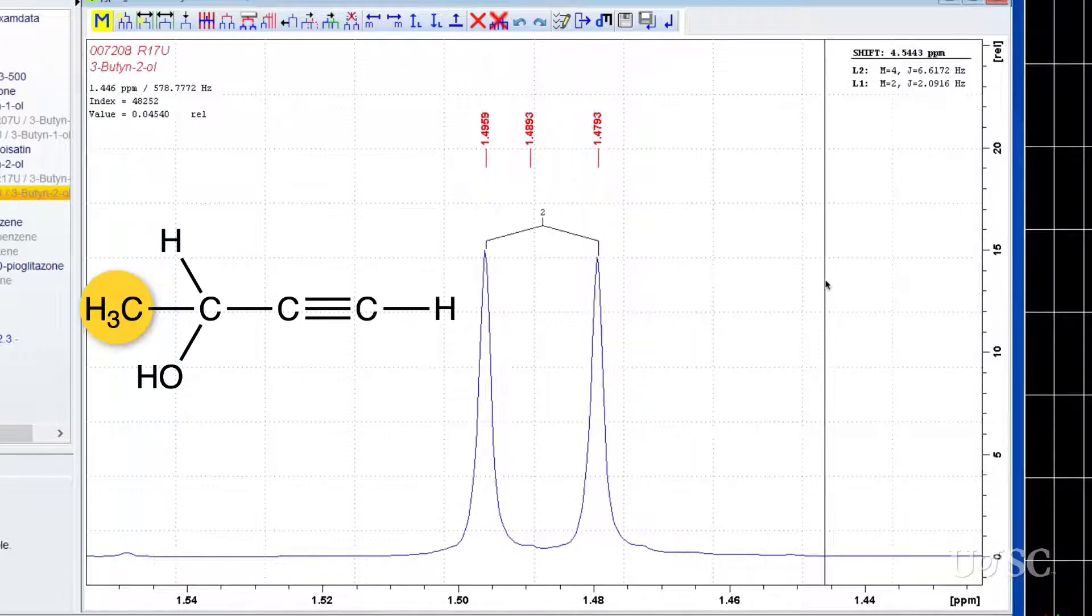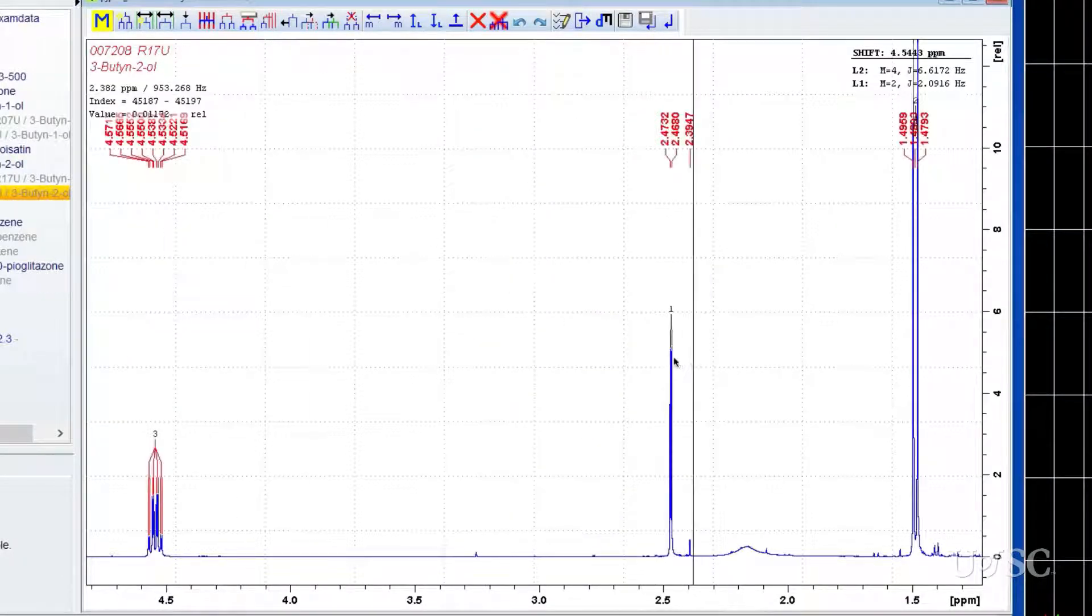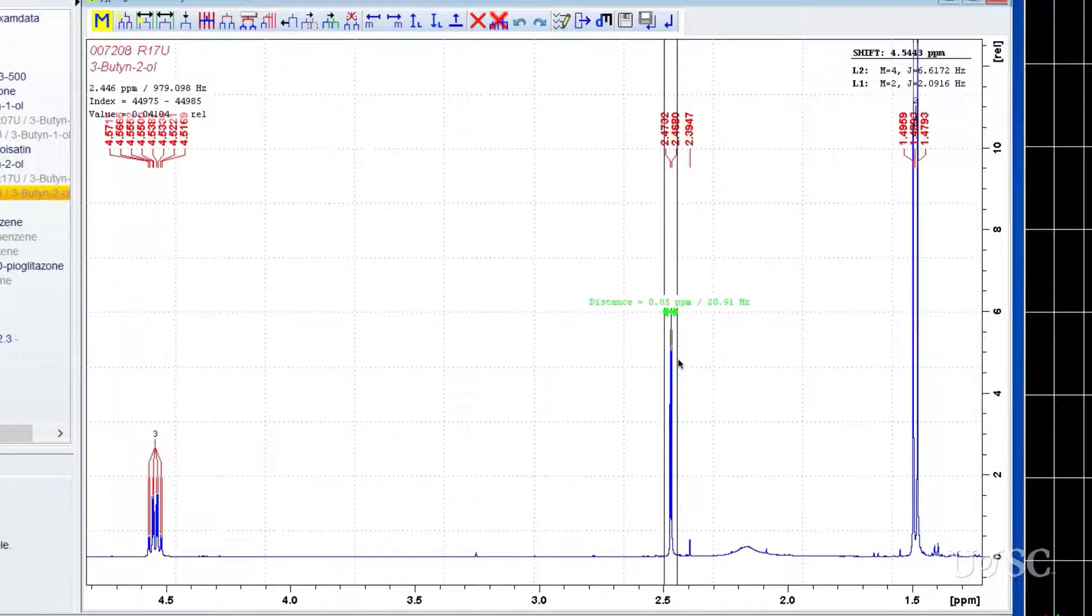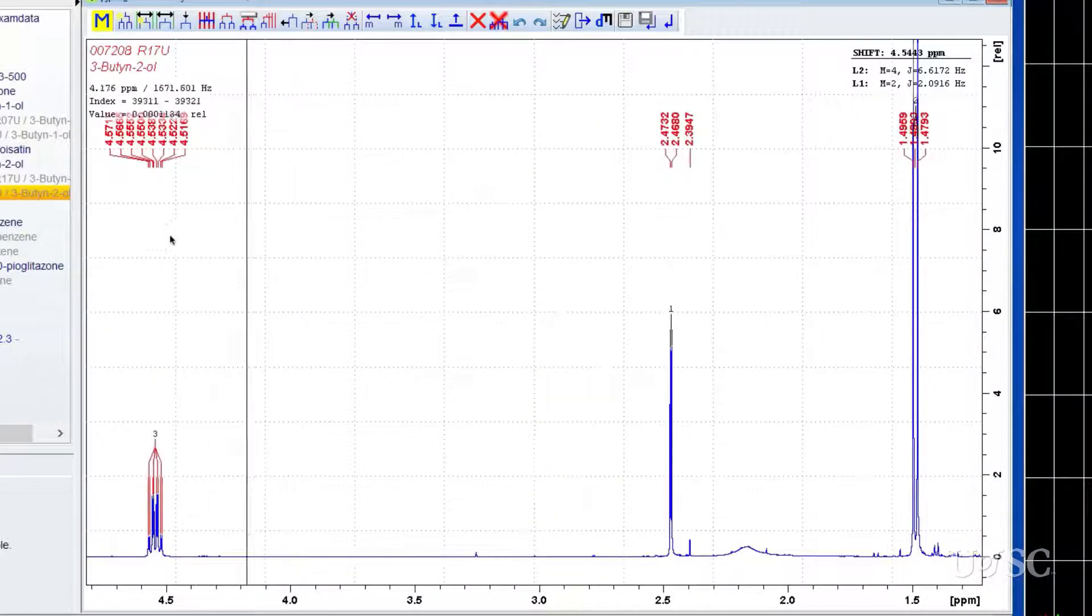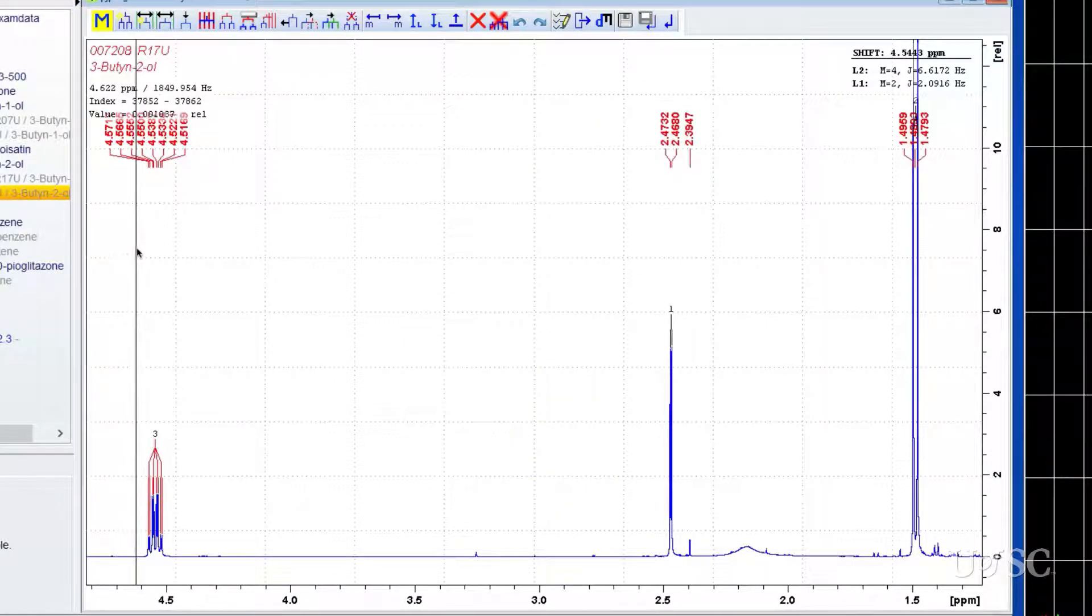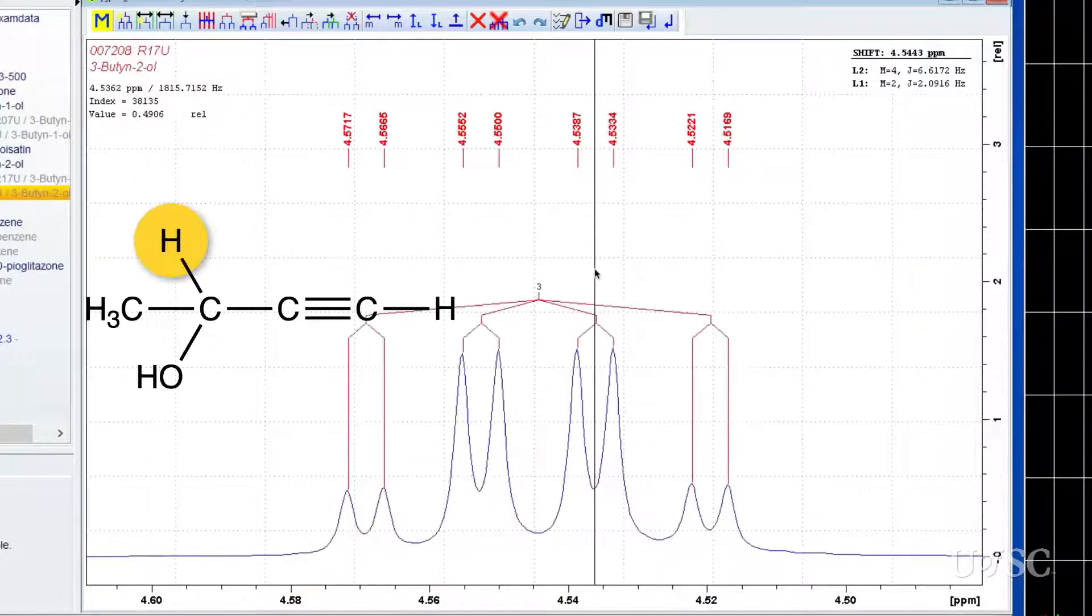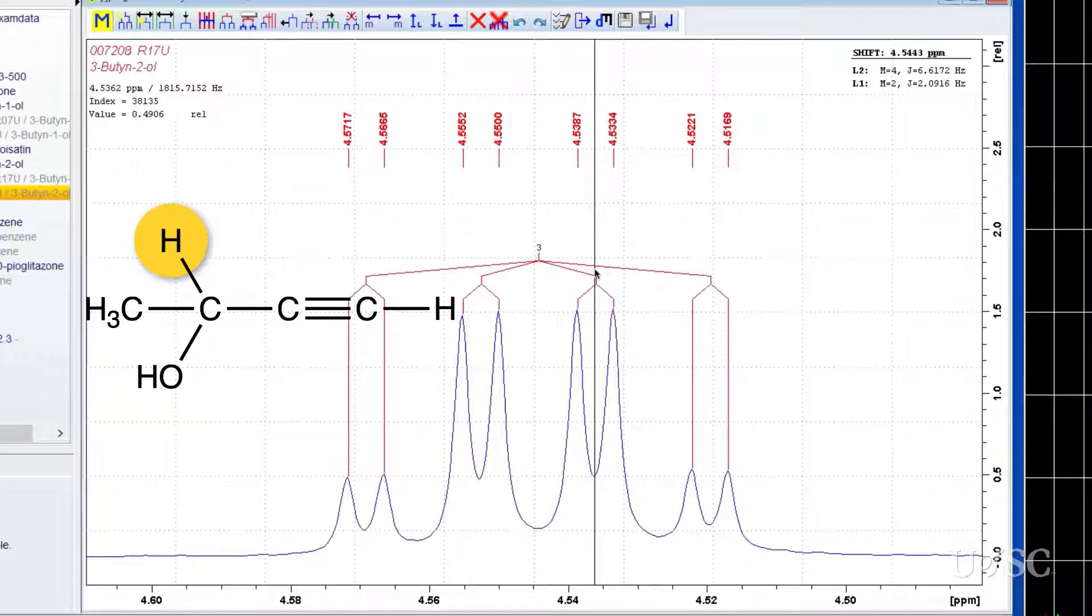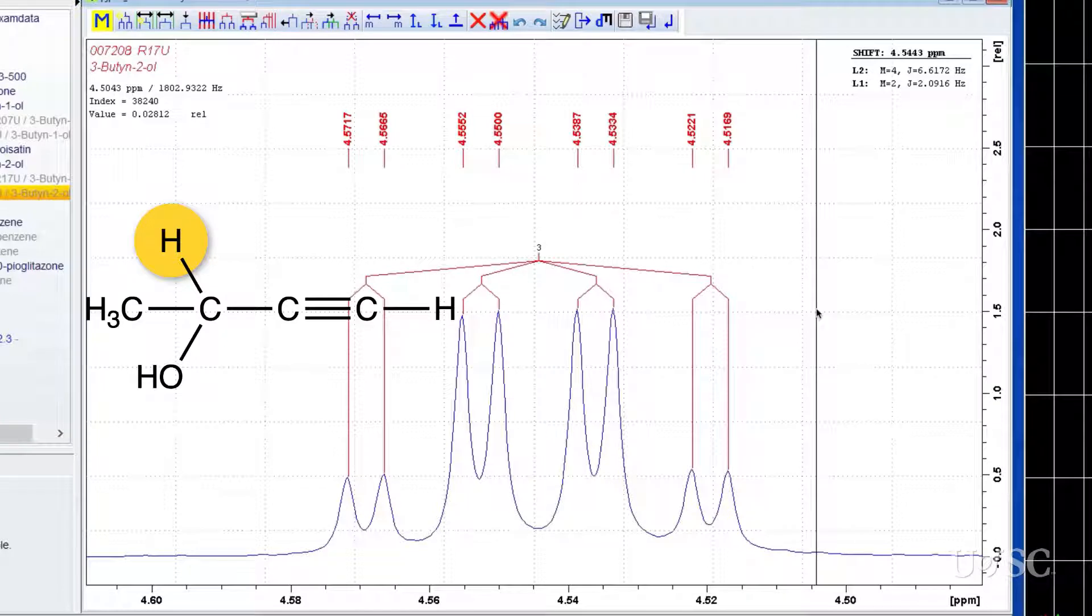The methyl resonance at 1.49 ppm shows as a 6.6 Hz doublet due to coupling with the methine. The multiplet bracket looks correct. The alkyne proton is also coupled to the methine and is the 2 Hz doublet at 4.54 ppm. The bracket on this multiplet also looks correct. The methine proton is split into a quartet of doublets. The larger quartet is due to coupling to the 3-methyl protons.